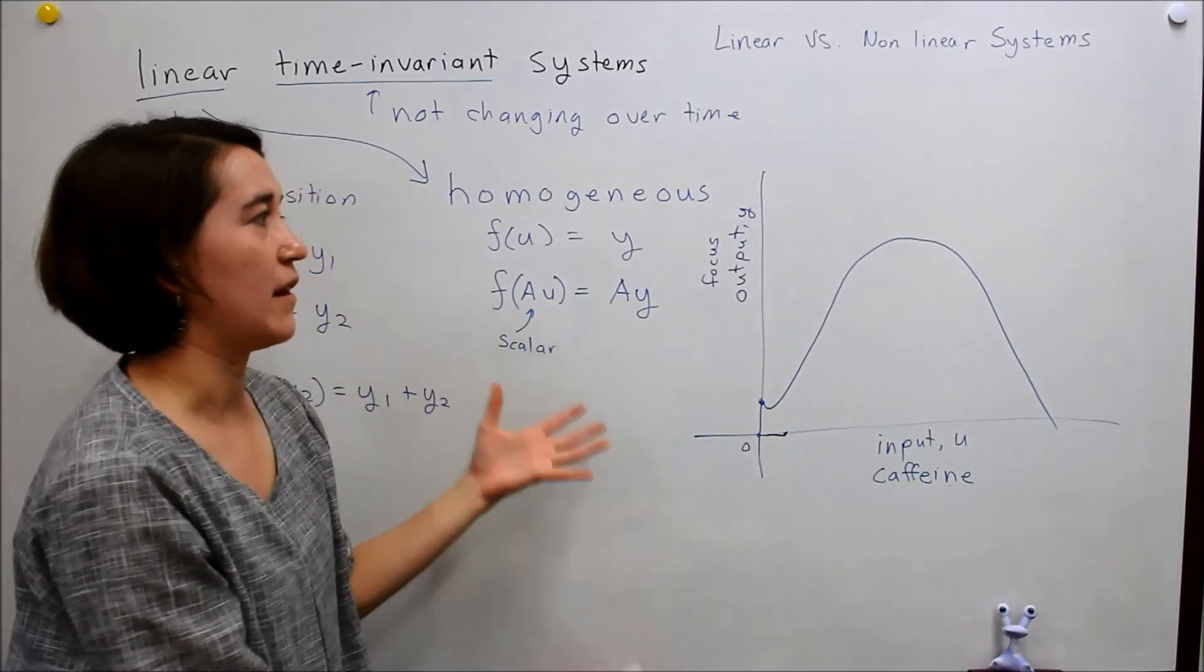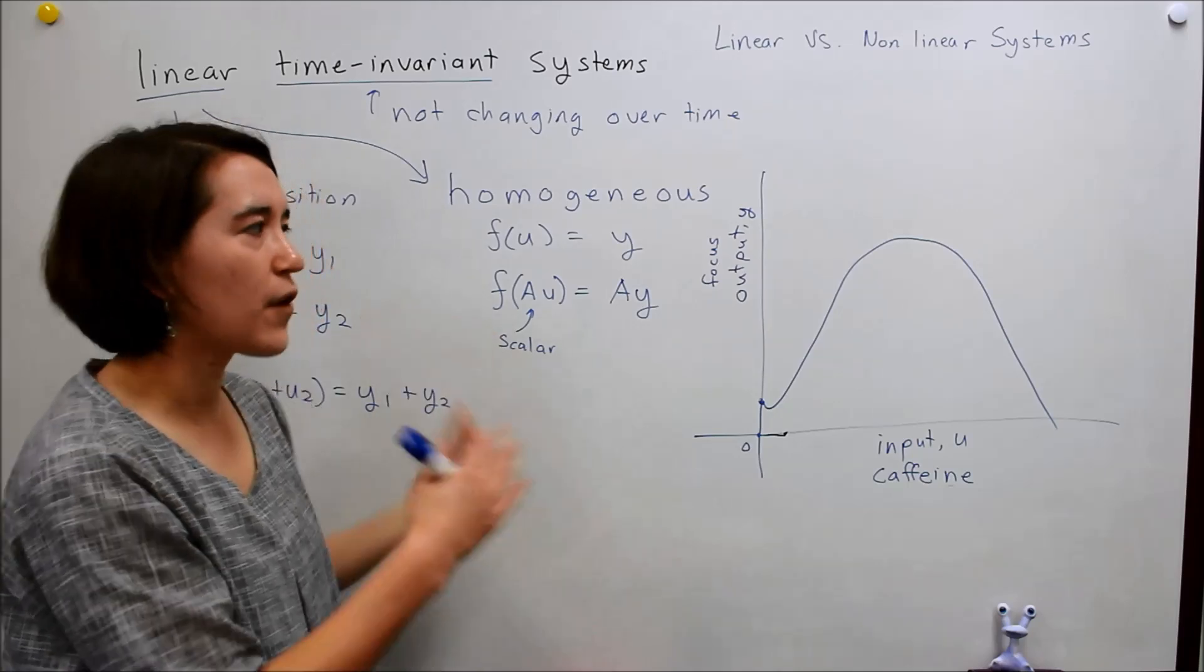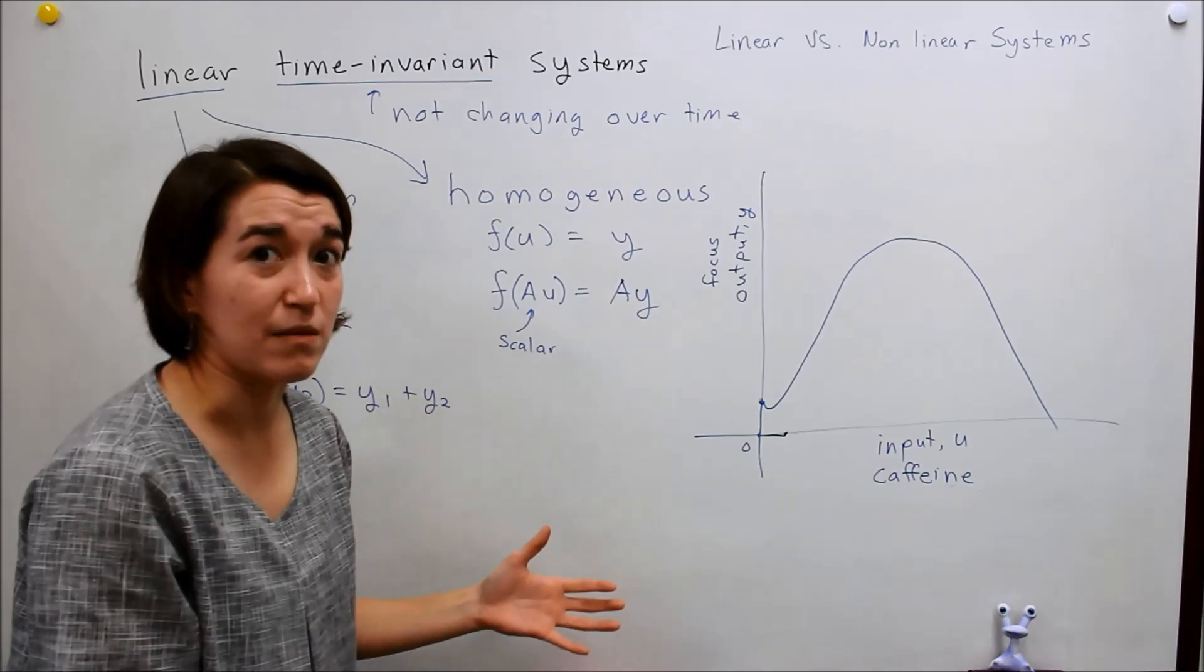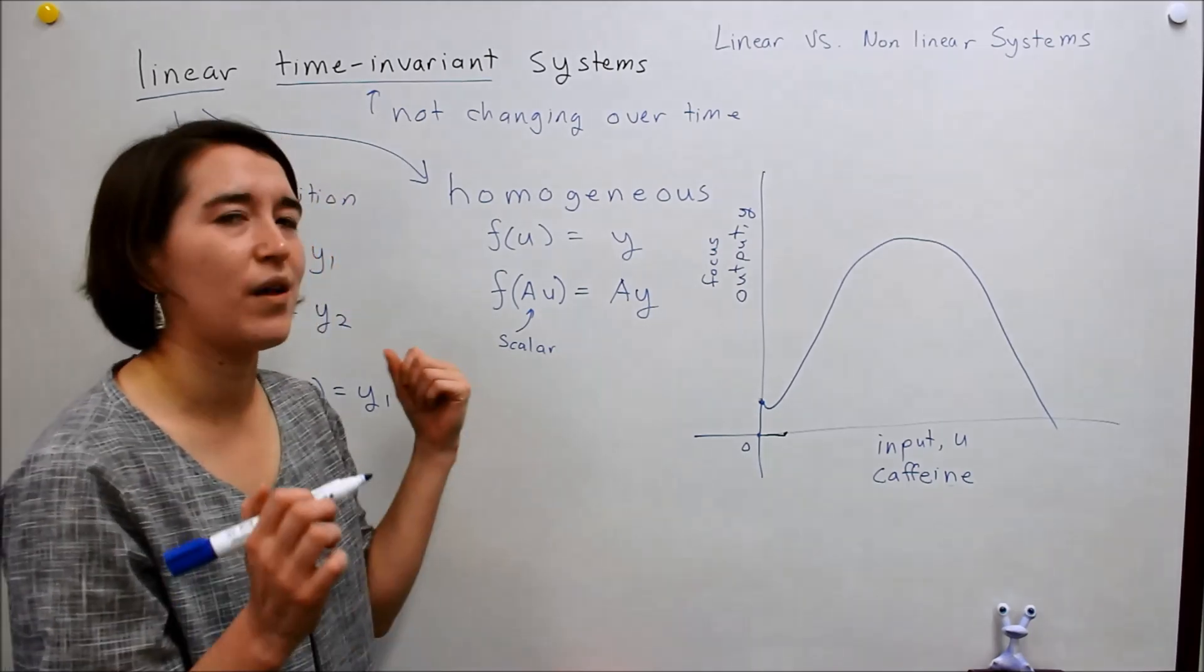How do we analyze it? Well, so far we've only looked at linear systems, and most of the techniques that we're going to use are actually for linear systems. So, what do we do?